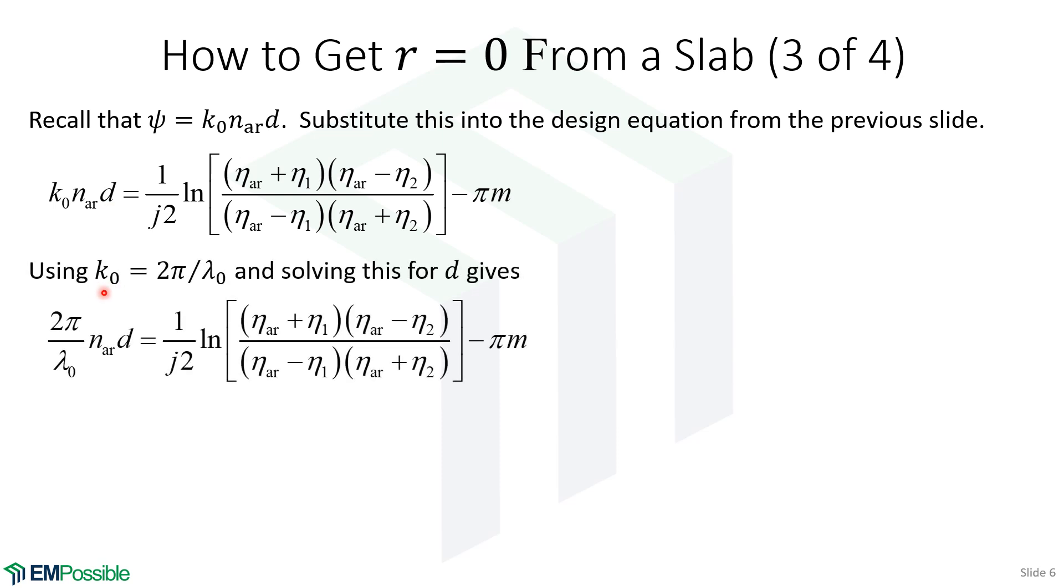Recognizing that K-naught is the free space wave number, 2 pi over lambda, we can replace the K-naught with 2 pi over lambda. Now we're in a good position to solve for D. So we can do that, and we see we have a lambda-naught over 4 N-A-R. This is essentially a quarter wavelength inside the layer, multiplying this term, which in general could end up being a complex number. And then plus or minus integer multiples of lambda over 2.